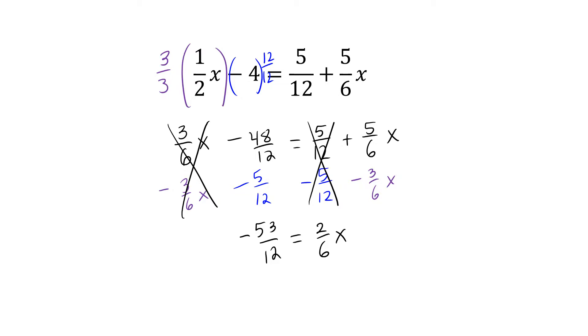Now since 2/6x can be simplified, we are going to simplify it. So we have negative 53/12 equals 1/3x.